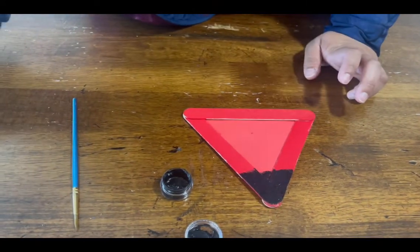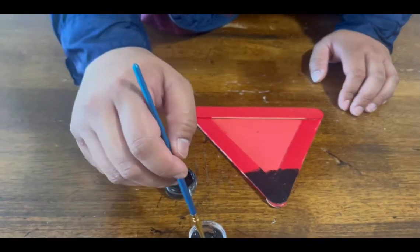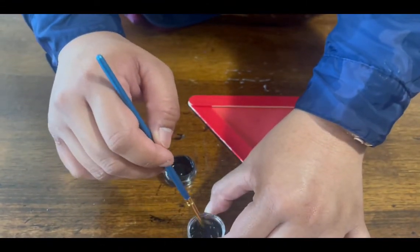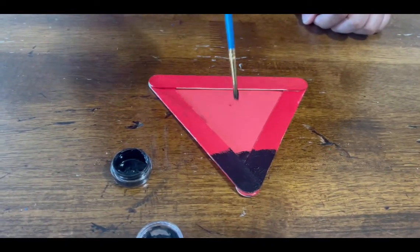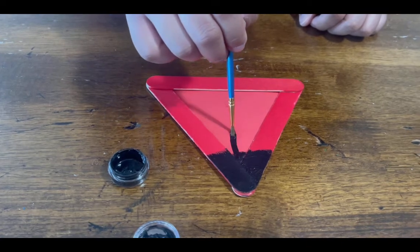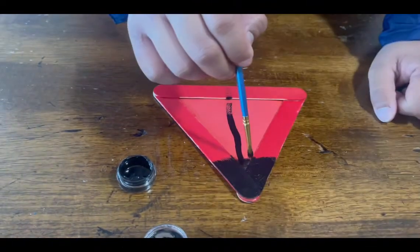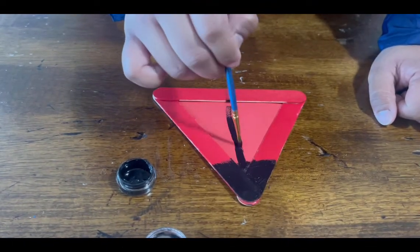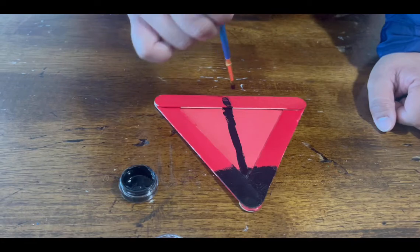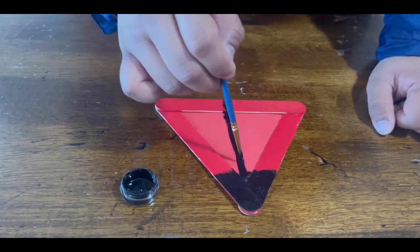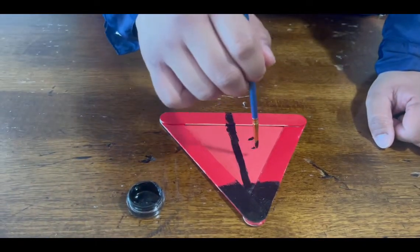And after that I am gonna be getting the thin paintbrush and dip it on my black paint. Draw a line in the middle of the body, so from here, just draw a line going here. And then let's not miss the polka dots because every ladybug needs them.